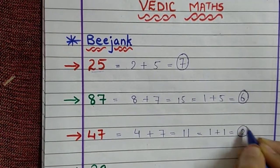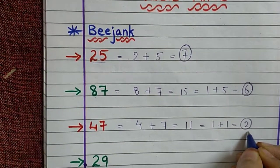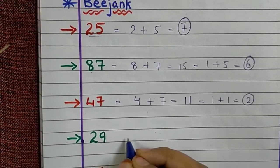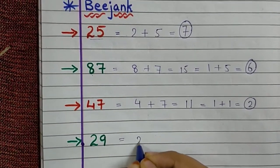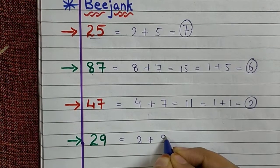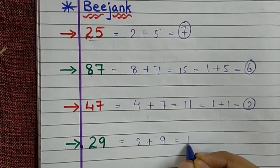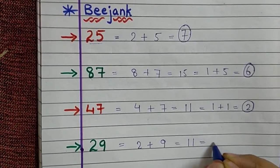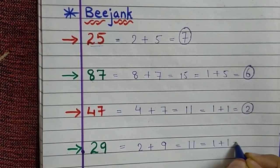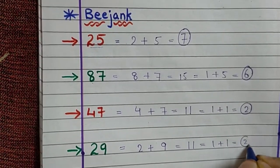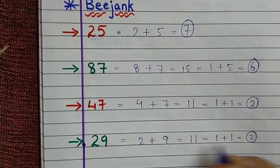Fourth number is 29. So 2 plus 9, again it is 11. So 1 plus 1 is equal to 2. Beejank of 29 is 2.